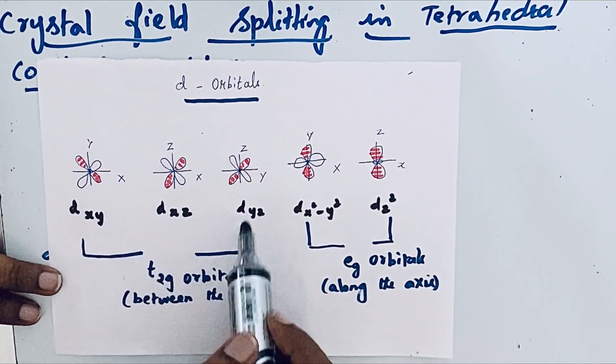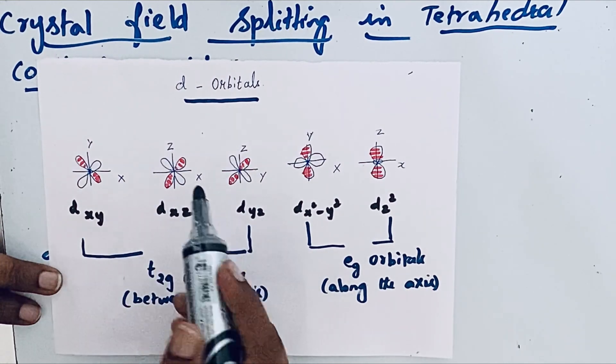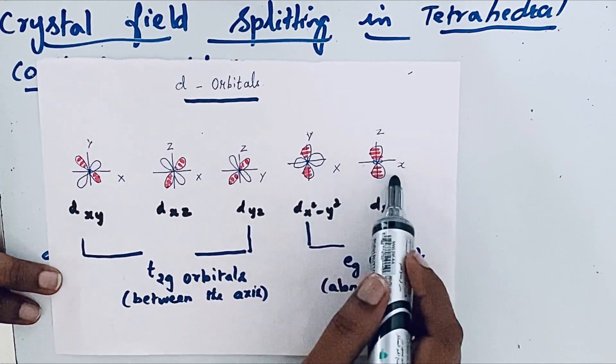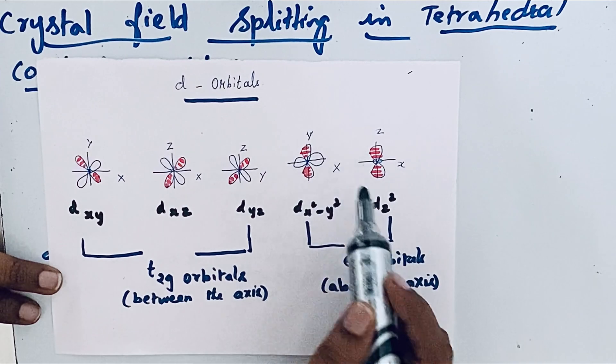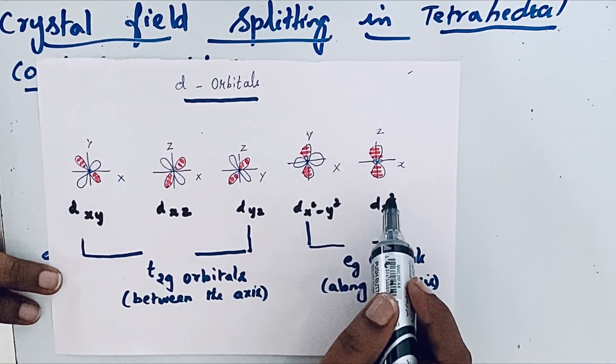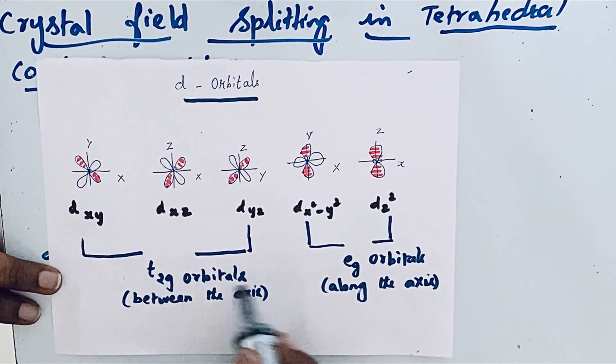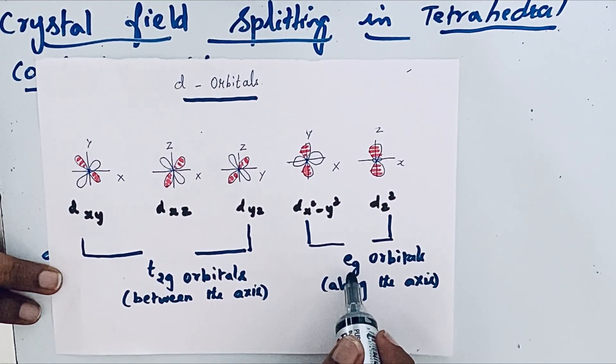So this is called t2 orbitals. Here, these two orbitals dx squared minus y squared and dz squared, these orbitals are along the axis, they are called e orbitals. See, this g is we are not going to use it for tetrahedral geometry because this is not a symmetrical coordination entity.